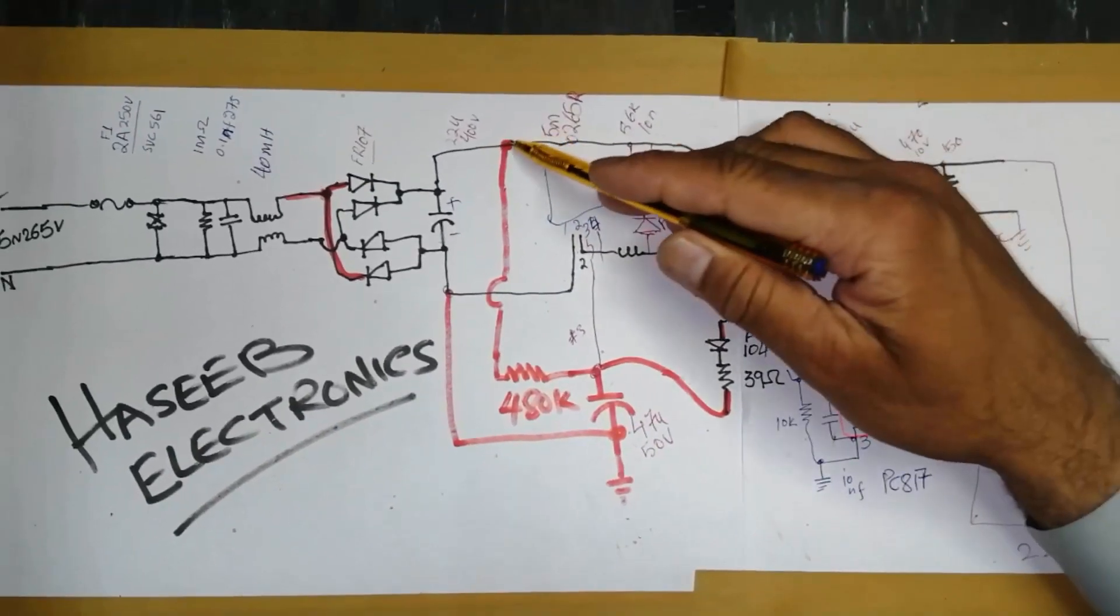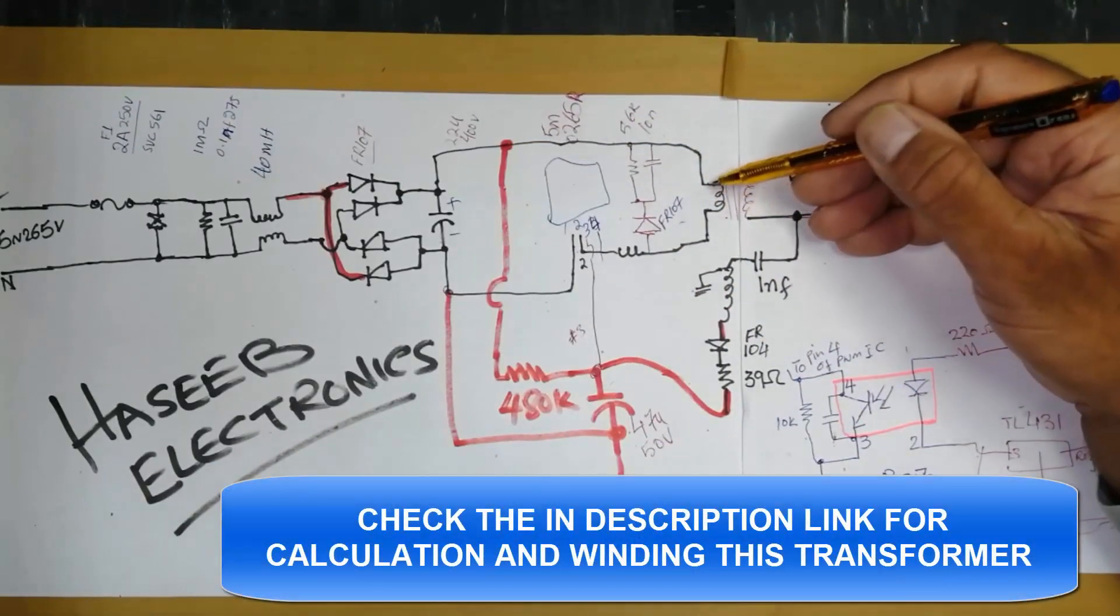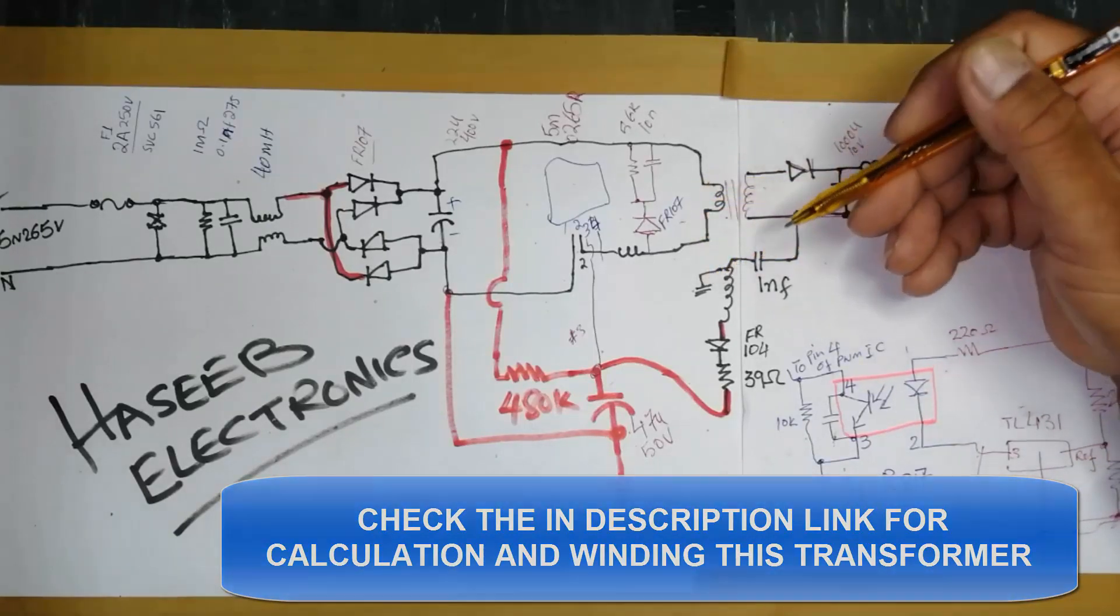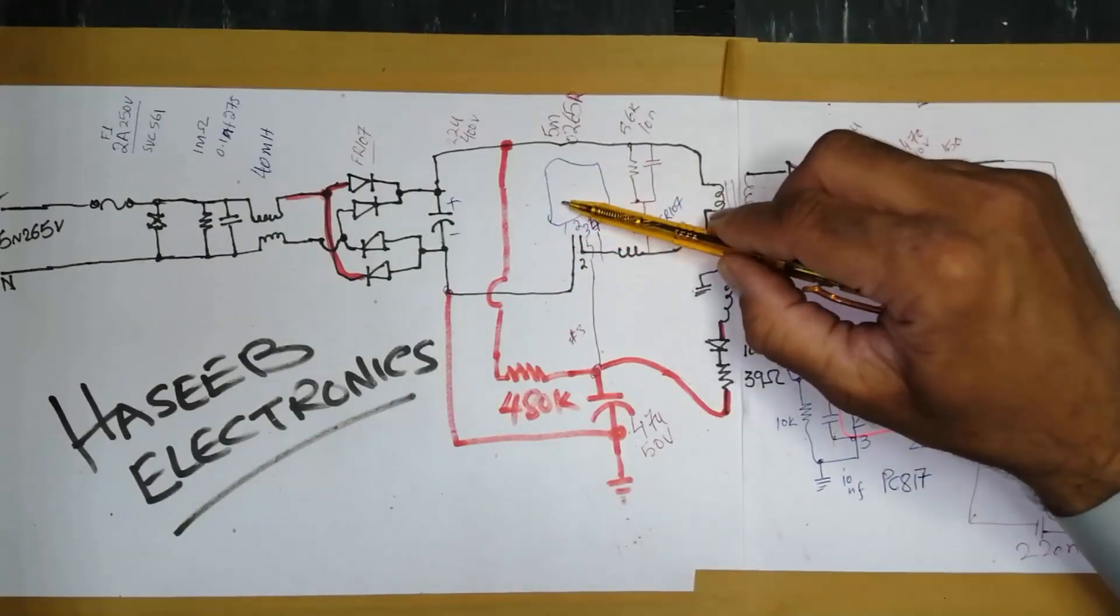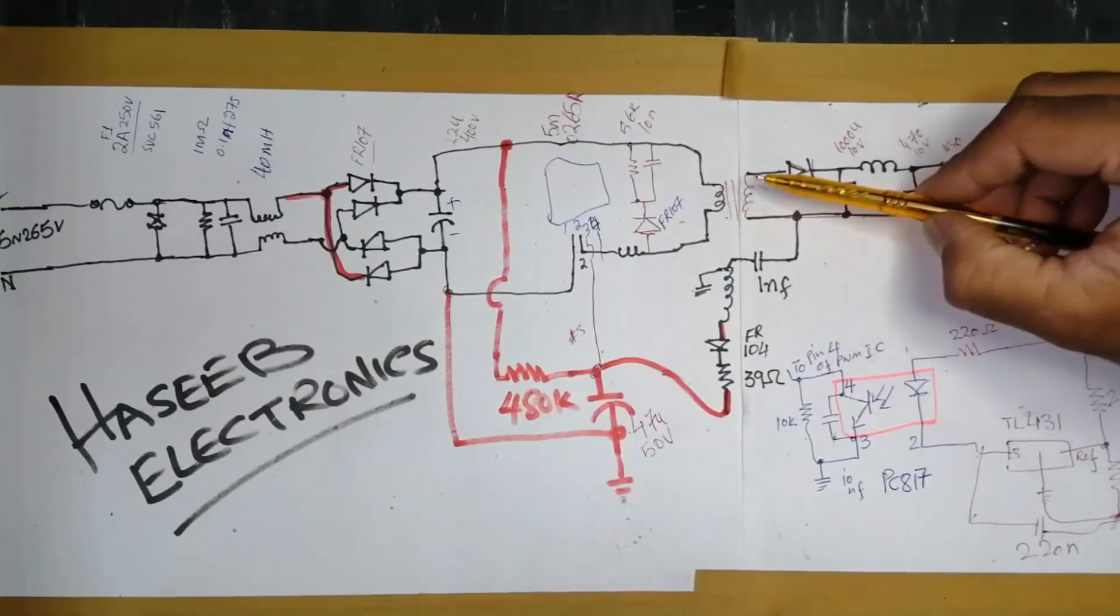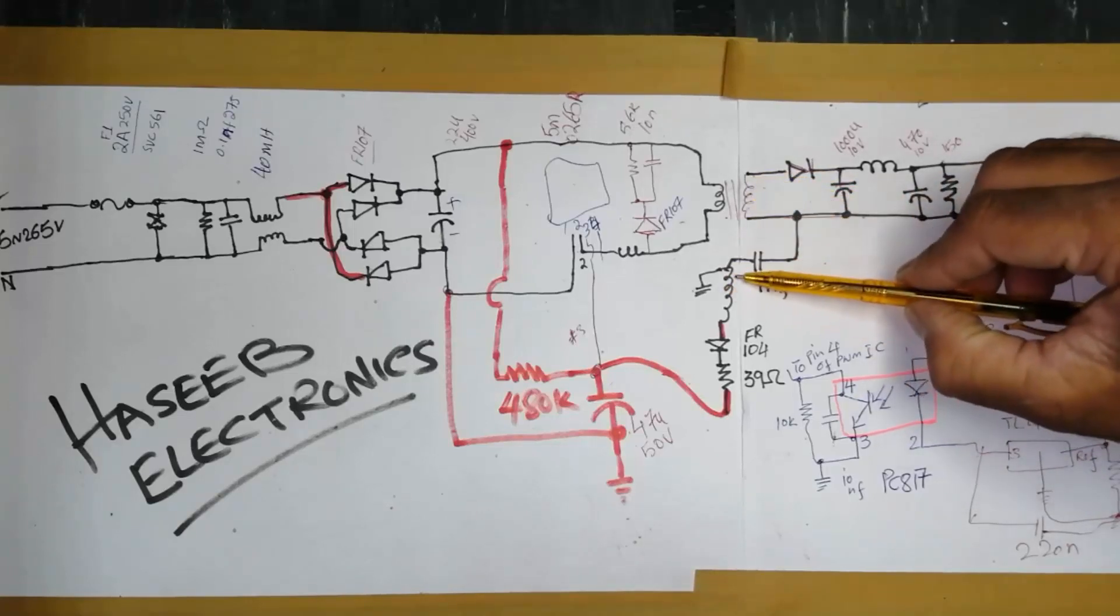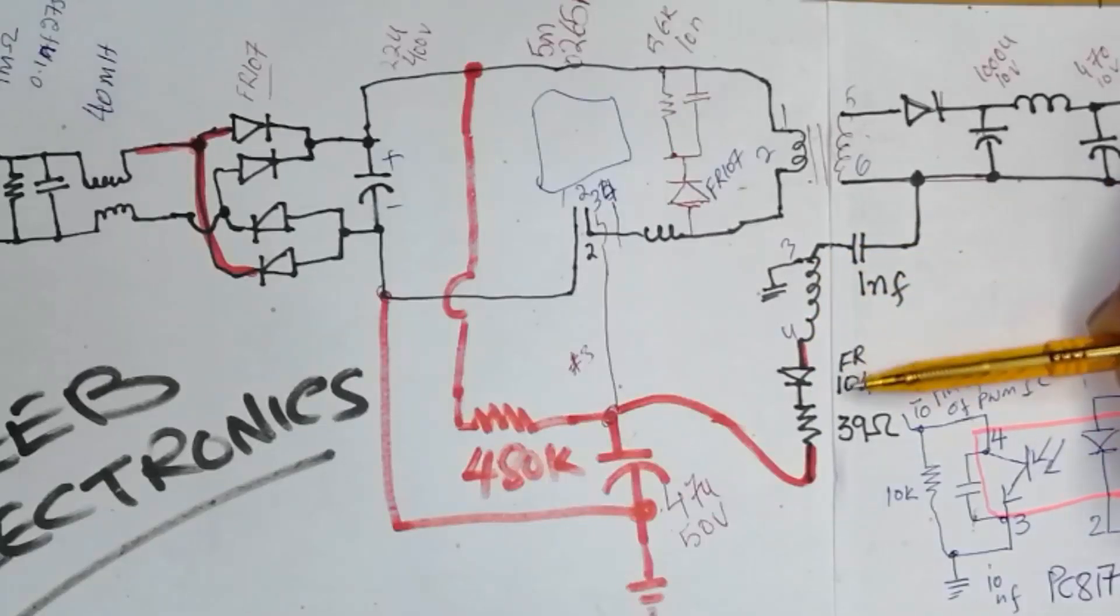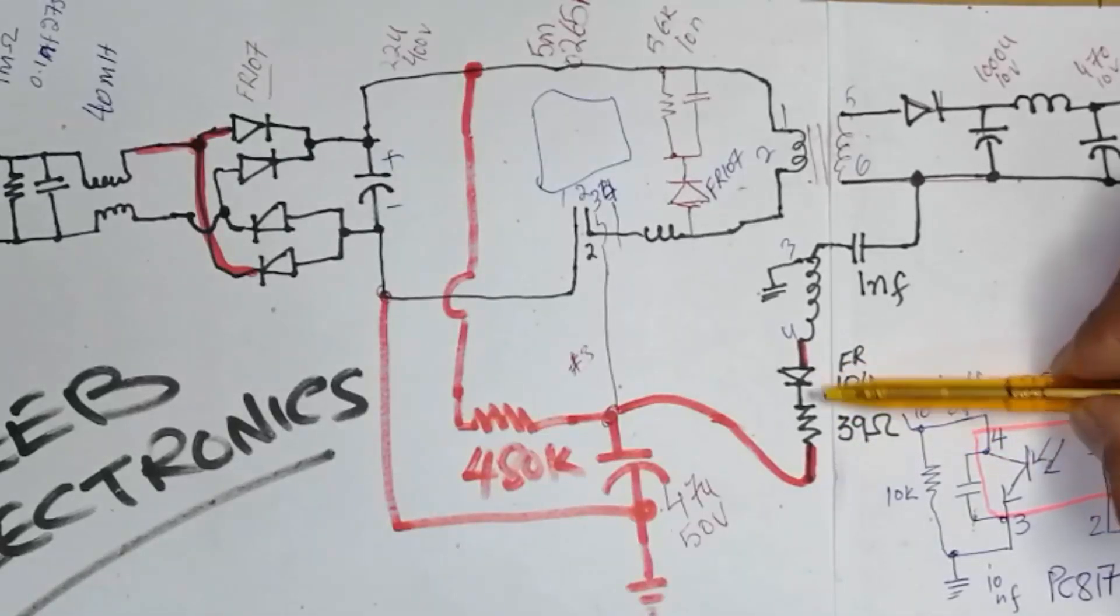It will start switching. The positive VCC side is connected to this transformer. I will share the calculations of this transformer, how you can make transformer on your own. This IC will start switching. When first pulse will start, it will cause to generate magnetic field here. This magnetic field will cause to induce voltage in secondary. At same time we will get voltage from auxiliary winding.